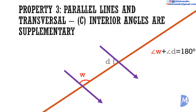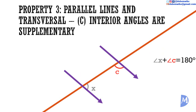Interior angles, on the other hand, are on the inside of the parallel lines but on the same side of the transversal. We should be able to tell that angle W and angle D are supplementary. Similarly, angle C and angle X are also supplementary. Interior angles are supplementary.